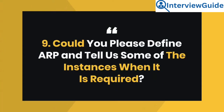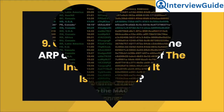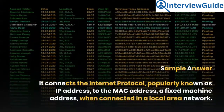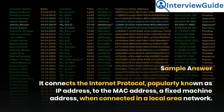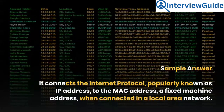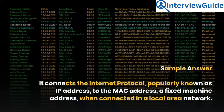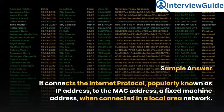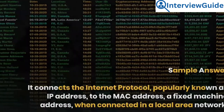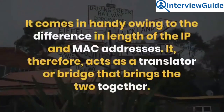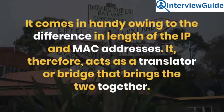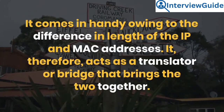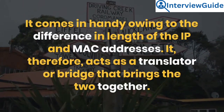Question 9: Could you please define ARP and tell us some of the instances when it is required? ARP, the Address Resolution Protocol, connects the internet protocol (IP address) to the MAC address, a fixed machine address, when connected in a local area network. It comes in handy owing to the difference in length of the IP and MAC addresses. It therefore acts as a translator or bridge that brings the two together.